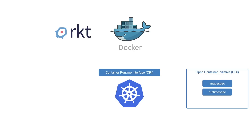So Rocket and other container runtimes that adhere to the OCI standards were now supported as container runtimes for Kubernetes via the CRI. However, Docker wasn't built to support the CRI standards, because Docker was built way before CRI was introduced and Docker still was the dominant container tool used by most. So Kubernetes had to continue to support Docker and introduced what is known as Docker shim — a hacky but temporary way to continue to support Docker outside of the container runtime interface.